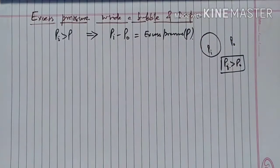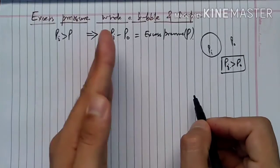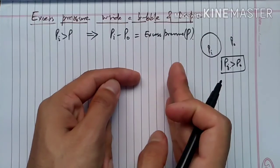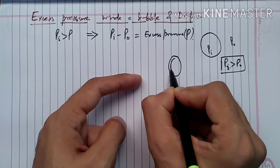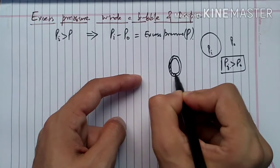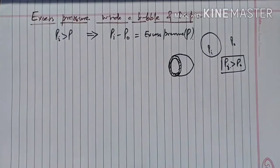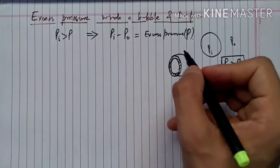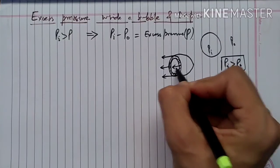We denote excess pressure as P. Now, for a liquid bubble or drop, let's imagine we break the bubble into equal halves — we cut it in half. Suppose the radius of the bubble is R. The surface tension will be tangential. Suppose surface tension is T.